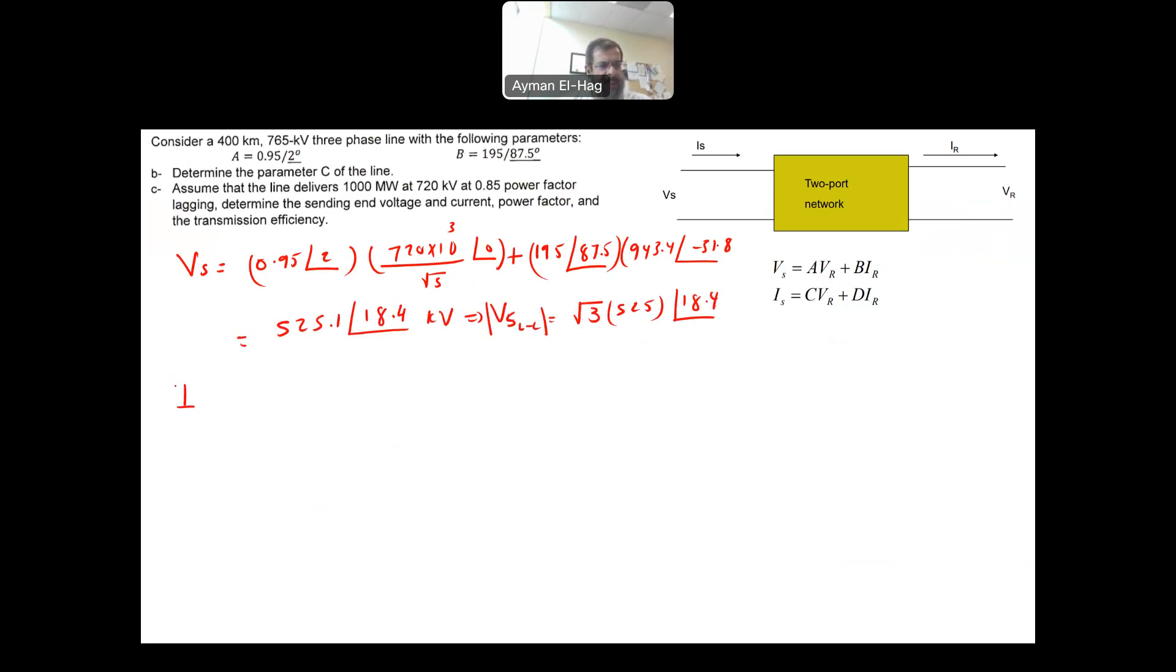Now your IS. It is C, which we calculated from the previous step, 6.05 times 10 to minus 4 angle of 60.3. This will be times 720 times 10 to power 3 over root 3 angle of 0 plus our D. D is the same as A, 0.95 angle of 2 times the current, which we calculated 943.4 angle of minus 31.8. Then you will find that your IS is equal to 930 angle of minus 14.11. So we found VS and IS.